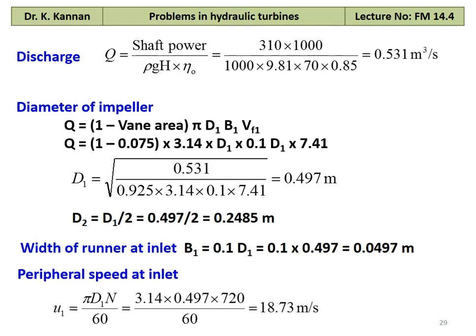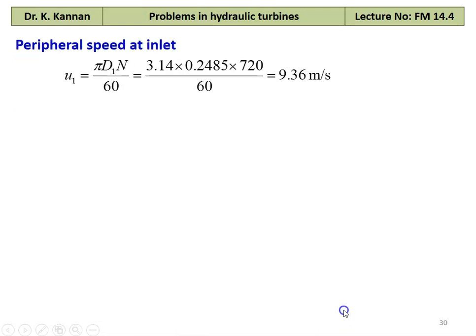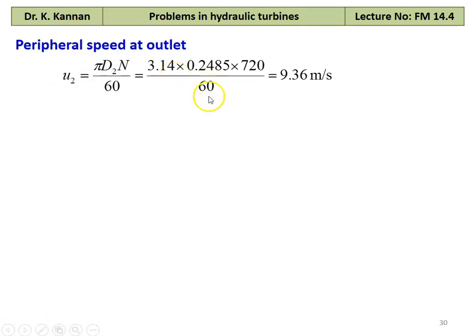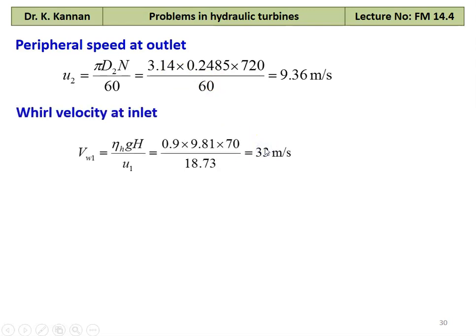Peripheral speed at the inlet: U1 equal to pi D1 N divided by 60, which is 3.14 into 0.497 into 720 divided by 60 equal to 18.73 meters per second. Peripheral speed at the outlet: U2 equal to pi D2 N divided by 60, which is 3.14 into 0.2485 into 720 divided by 60 equal to 9.36 meters per second. Whirl velocity at the inlet from the definition of hydraulic efficiency: Vw1 equal to hydraulic efficiency into g H divided by U1, which is 0.9 into 9.81 into 70 divided by 18.73 equal to 33 meters per second.